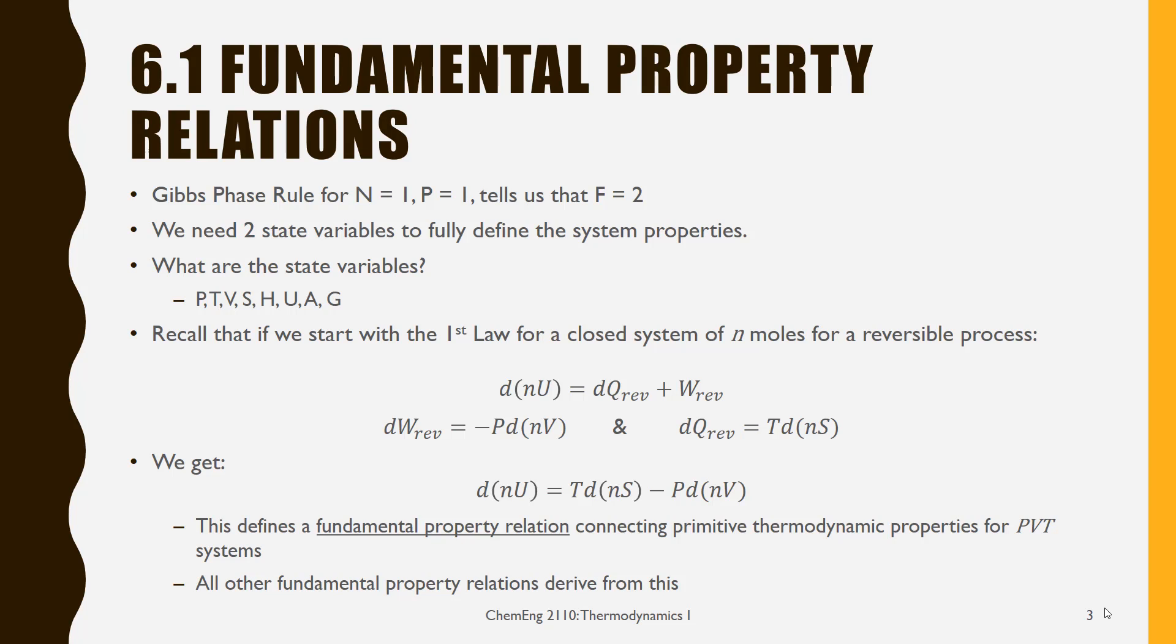Now remember that in the last chapter we had been looking at the first law for a closed system, and we said if I assume a reversible process, then dQ is T times the change in total entropy, and dW for that reversible process is minus P times the change in total volume. When I do that, I end up with the change in total internal energy is T times the change in total entropy minus P times the change in total volume. And this is a fundamental property relation, and this will connect my primitive thermodynamic properties.